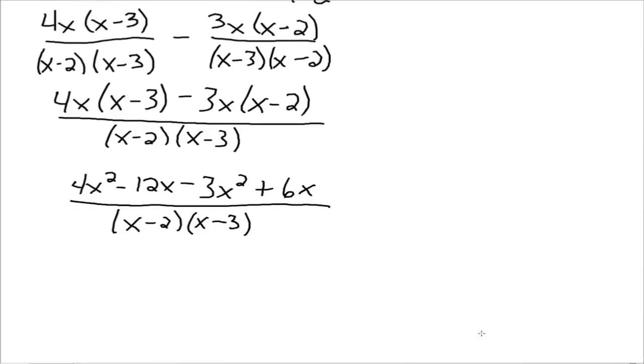All over the same LCD, x minus 2, x minus 3. So now, what do we get? 4x squared minus 3x squared, so that's just going to go to x squared. Negative 12x plus 6x goes to, everybody agree, goes to negative 6x. All divided by x minus 2, x minus 3.